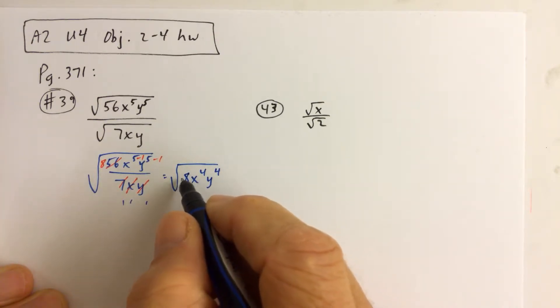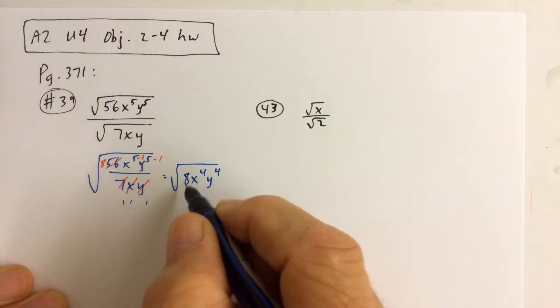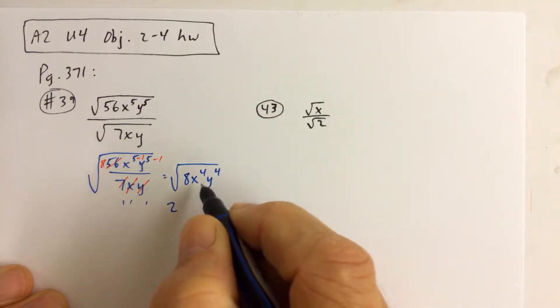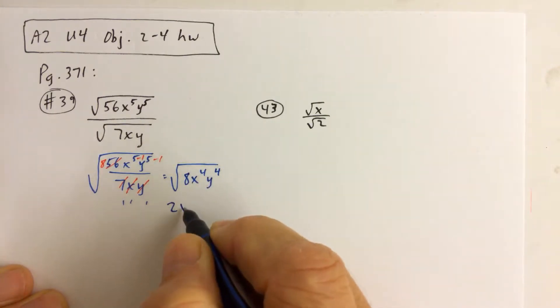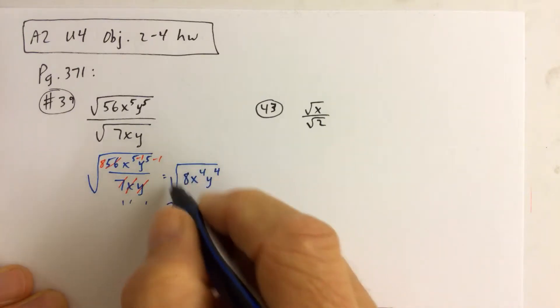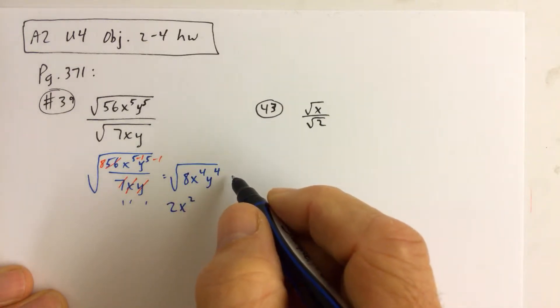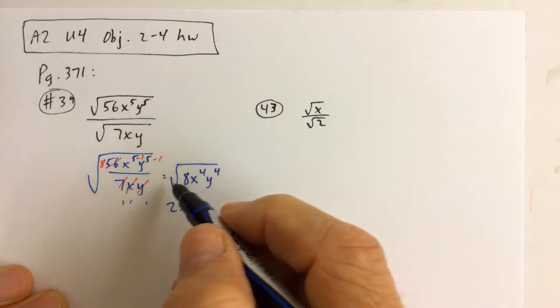And then we should know that the square root of 8, which is the square root of 2 times 2 times 2, we could take two 2s out. We get a 2 on the outside. The square root of x to the fourth is x squared. So this is all the stuff that we did way back in the last section where we sorted cards.